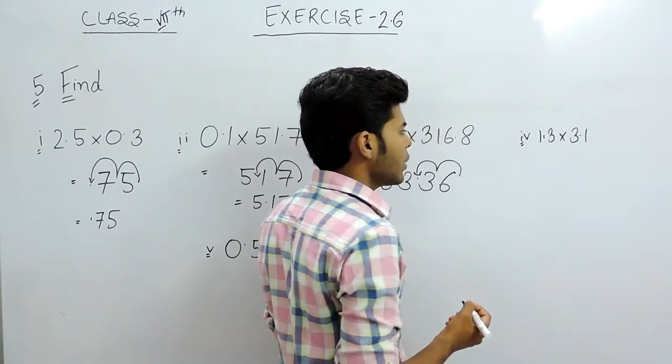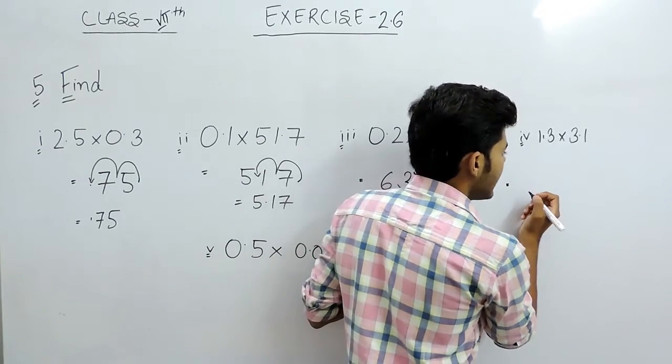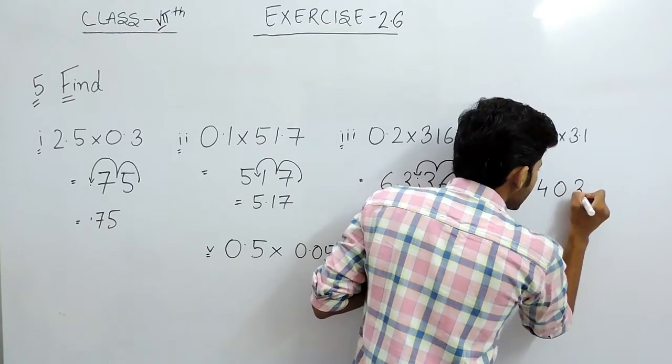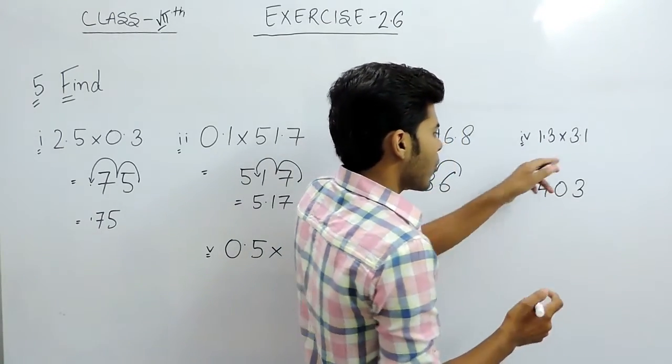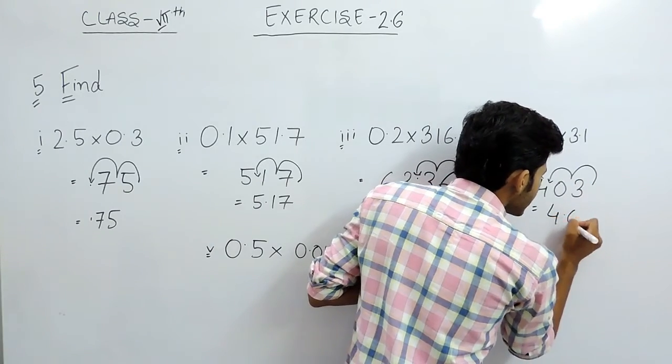Now in this one we will multiply 13 with 31 and it will give us 319 plus 13. That will be 403 and there are two decimal points. So the answer will be 4.03.